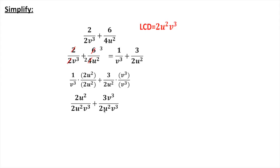Now that I've got the same denominator, I can simply just add their numerators. Because the bottoms are the same, I can add whatever is on top. Those two cannot be combined. And I'm just left with 2u squared plus 3v cubed, all over 2u squared v cubed.